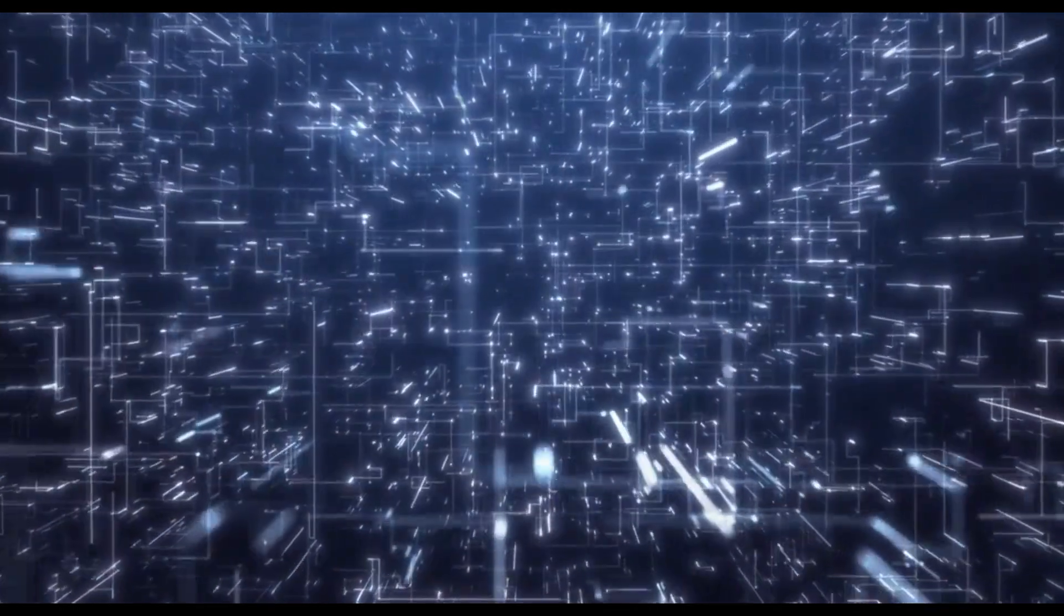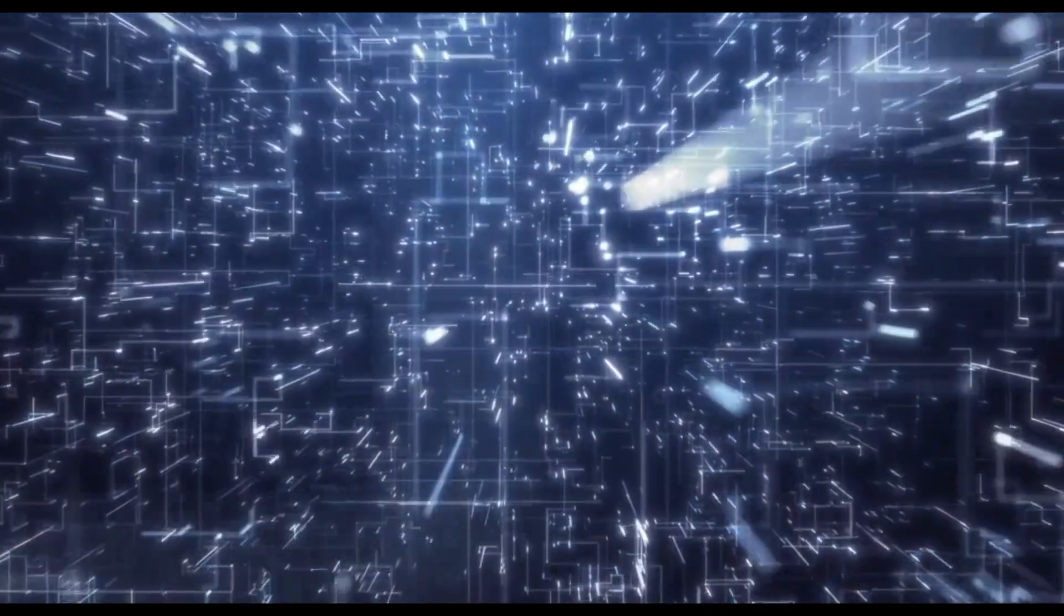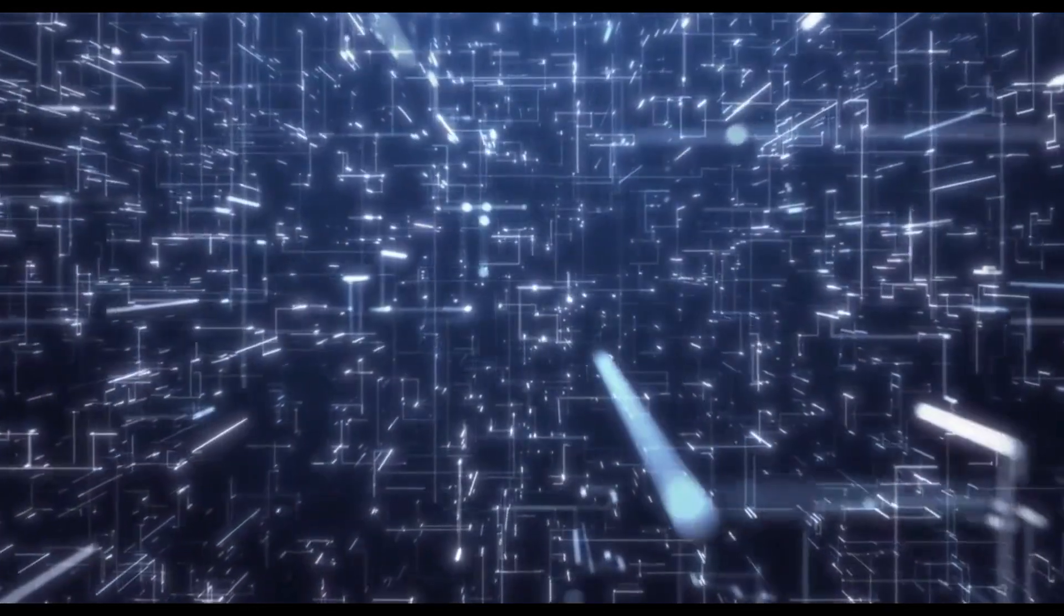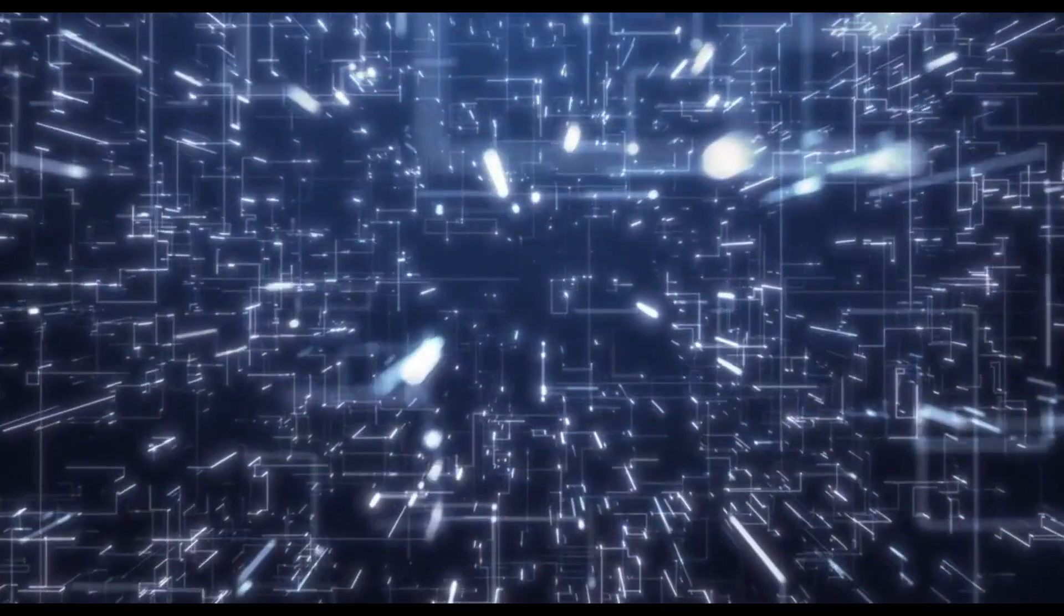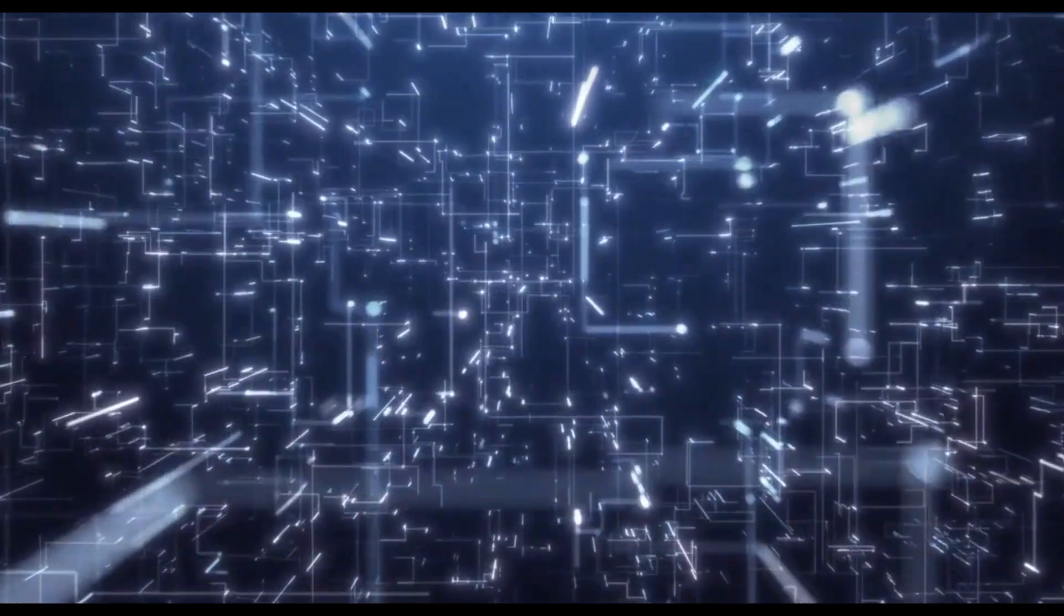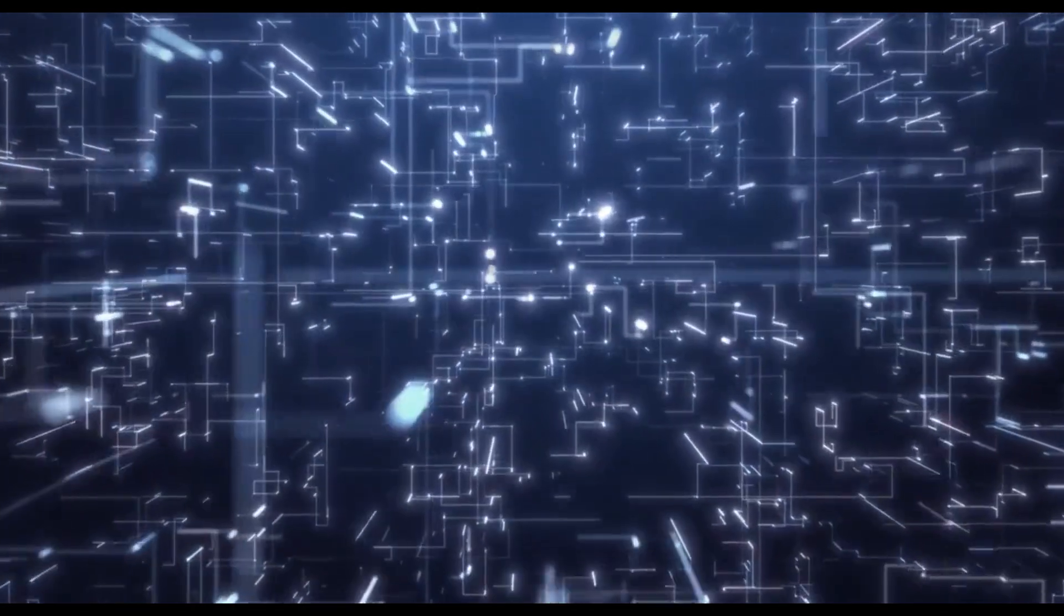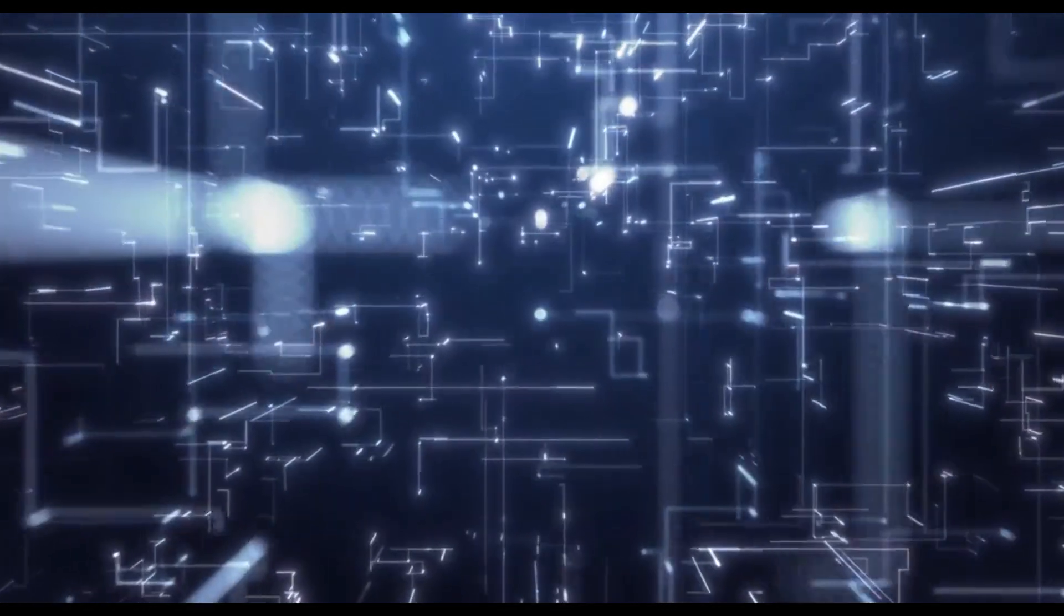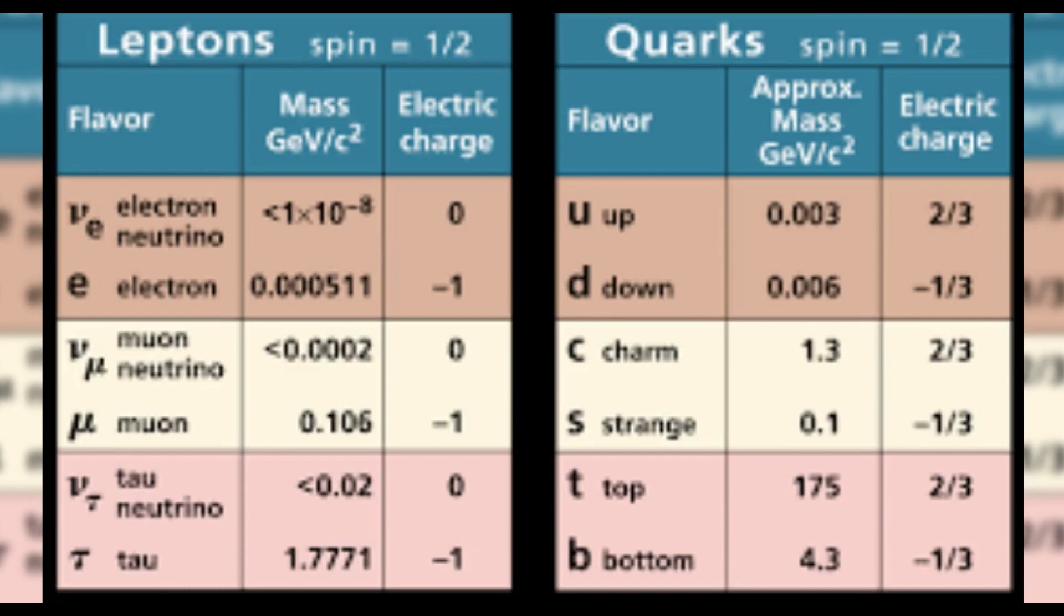There are two types of quantum statistics: Fermi-Dirac statistics and Bose-Einstein statistics. Fermi-Dirac statistics apply to particles with half-integer spins, such as electrons, protons, and neutrons. These particles are called fermions.